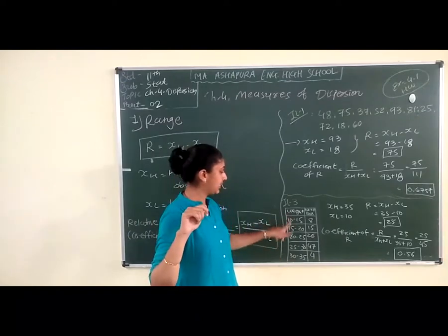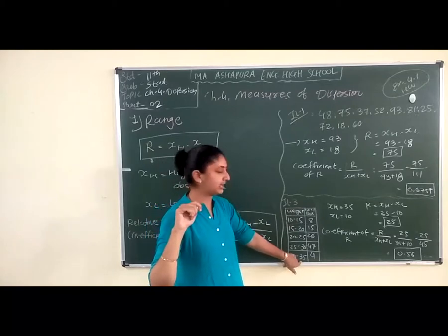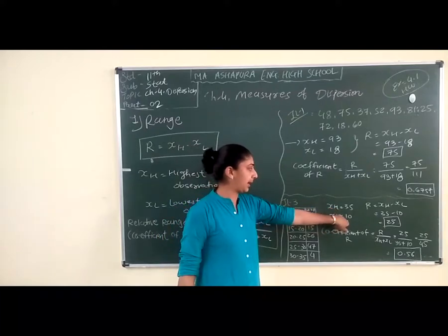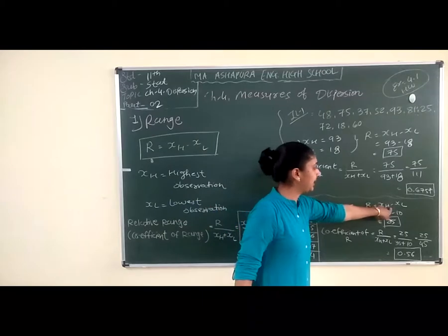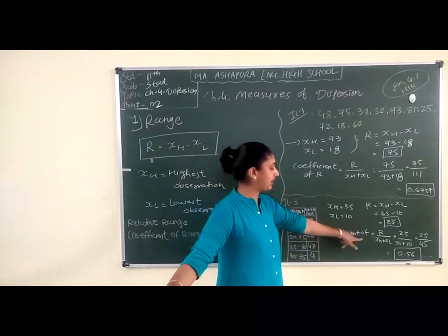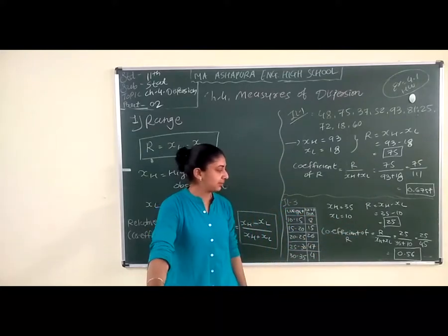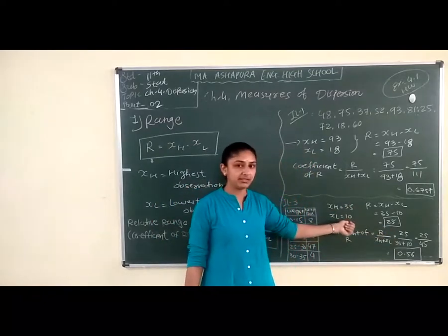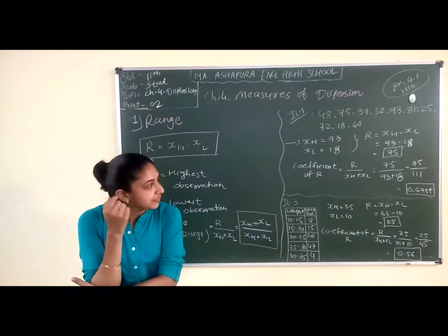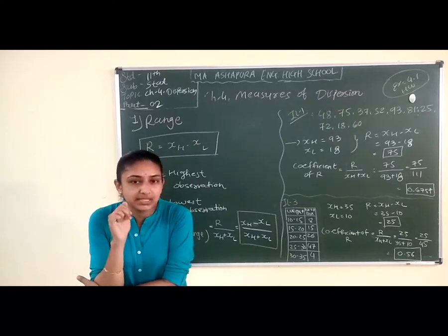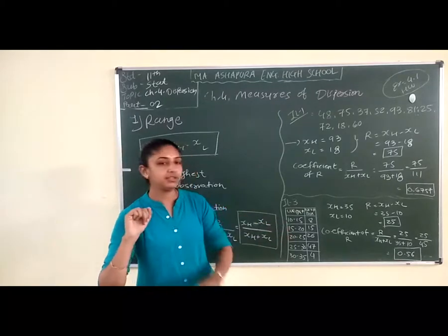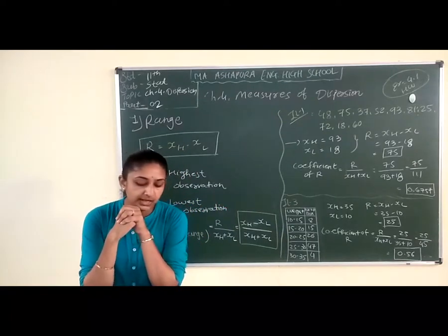You have to consider weight only. So XH is equal to 35 and XL is equal to 10. R is equal to XH minus XL: 35 minus 10 is equal to 25. Now, the coefficient of range is R divided by highest value plus lowest value: 25 divided by 35 plus 10 equals 25 divided by 45. So the coefficient of range is 0.56.